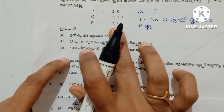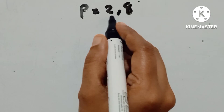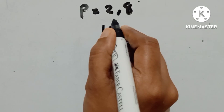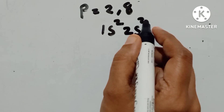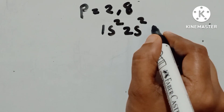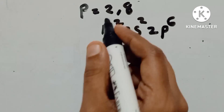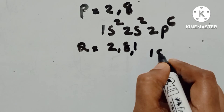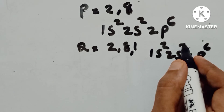Here is P, Q, and R. We have to see what we have here. Now we have a sub-shell and an electron. This is the electron. 1, 2 — 2s2.